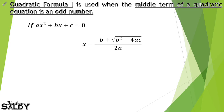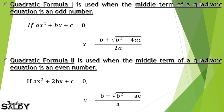The first quadratic formula is used when the middle term of a quadratic equation is an odd number, giving x = (-b ± √(b² - 4ac)) / 2a. The second quadratic formula is used when the middle term is an even number, giving x = (-b ± √(b² - ac)) / a.